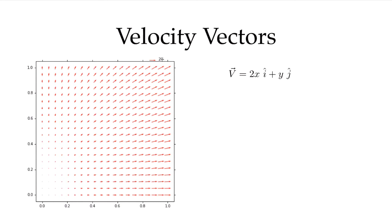I can plot that over a mesh going from x equals 0 to 1, y equals 0 to 1, and we plot everywhere an arrow showing both the magnitude of the velocity. There's a small scale here showing that a vector of this length represents 2 meters per second, and the direction of the vector shows the direction of the flow. We see that velocities are basically 0 down in this corner — when x is 0, the u component is 0; when y is 0, the v component is 0. Up in this corner, both u and v are non-zero, the direction points upward, and the velocity magnitude is somewhat bigger than 2 meters per second.